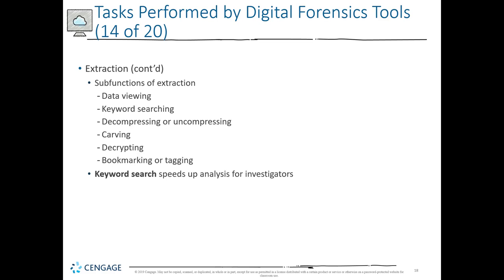Extraction also includes encrypting and decrypting, and tagging data. When analyzing information, we may have to tag what might be useful. Our search warrant may only give us certain abilities to look for specific keywords — we would only look for those keywords, and anything outside that scope we wouldn't be allowed to do. The granting authority defines the boundaries of what we're allowed to do.